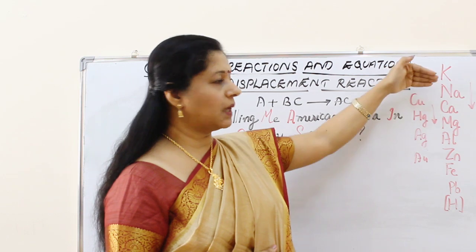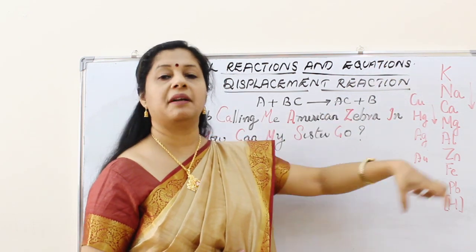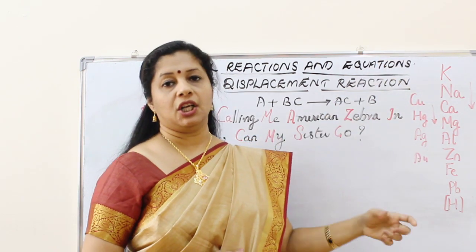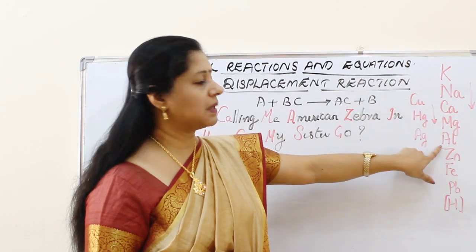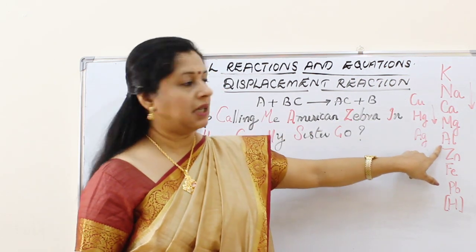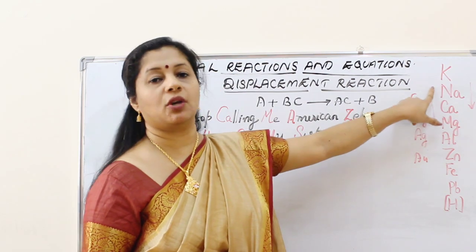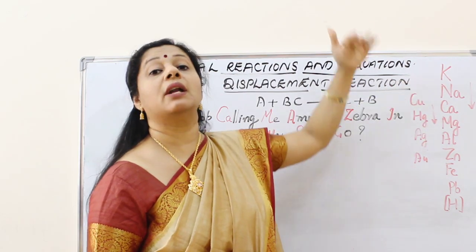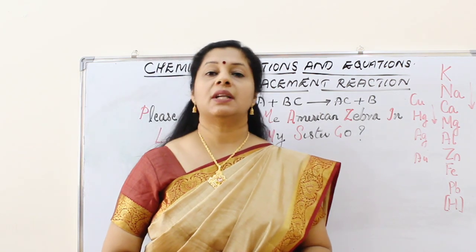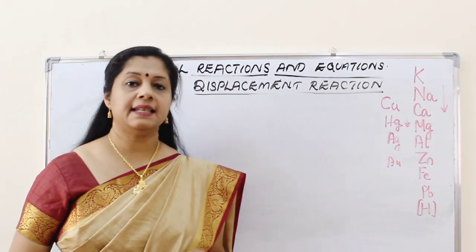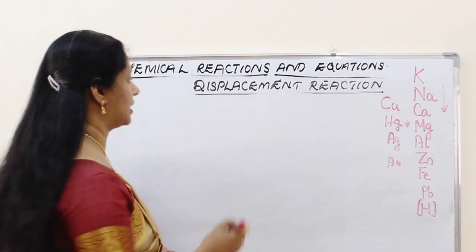Whichever element is higher on the list can displace the element below it from its compound. The lower one cannot displace the higher one. For example, sodium can displace aluminium, but aluminium cannot displace magnesium, calcium, sodium, or potassium because they are all above it — more reactive.